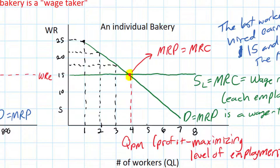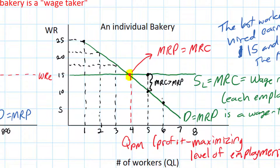However, beyond four workers, notice that the marginal resource cost is greater than the marginal revenue product, meaning the firm actually lost money on hiring the fifth worker, and the same is true for the sixth worker. At every level of employment beyond where MRC equals MRP, the cost of hiring additional workers is greater than the benefit or the revenue that the workers bring the firm.